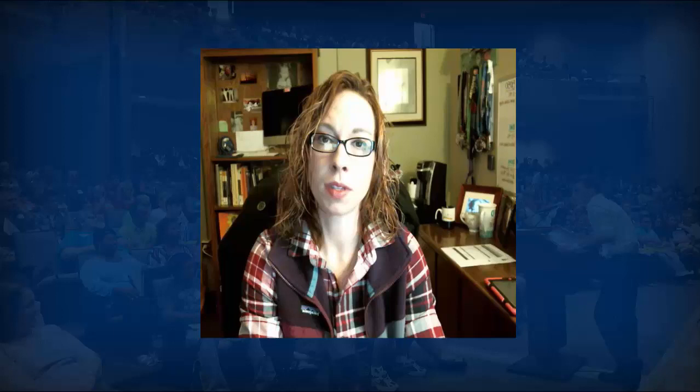There are four basic components of EHRs. The first is the collection and storage of health information on individual patients. Paper-based charts can lead to errors in collecting health information — we may see duplication or missed fields — but you don't really see that with electronic health records and electronic medical records because of the nature of their setup. The second component is access to information by authorized users.